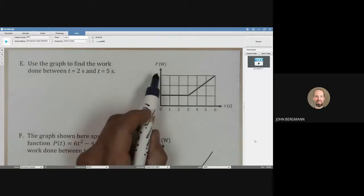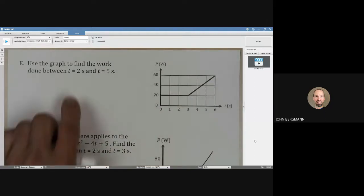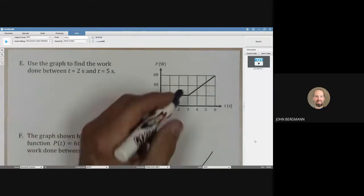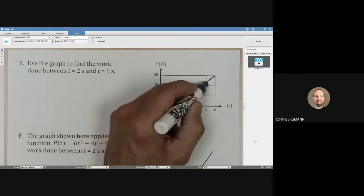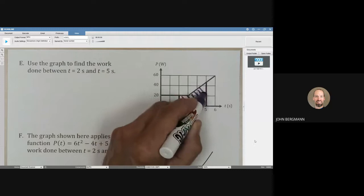We see in our graph that we have power and time on these axes, and if we want to find the work done by using a power-time graph, we want to find the area in this case between 2 and 5 seconds. So the area that we want is that area right there.